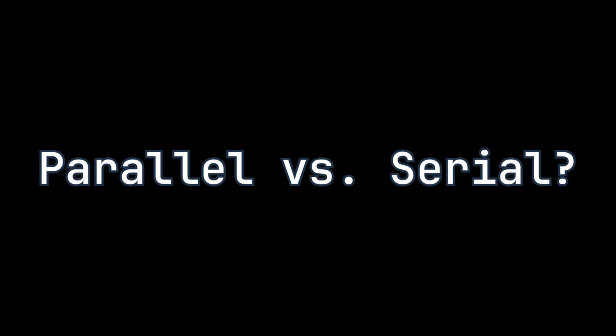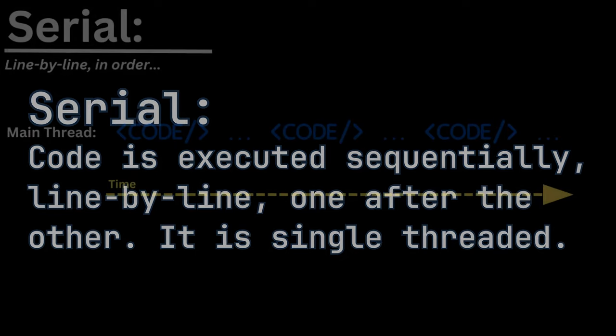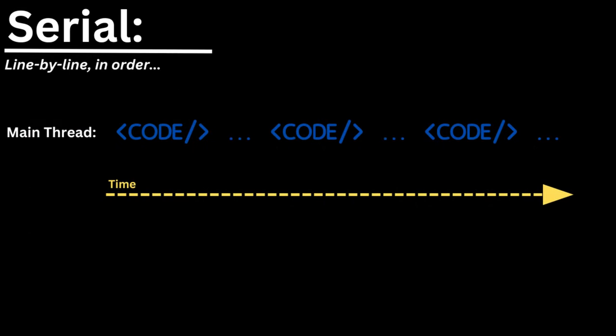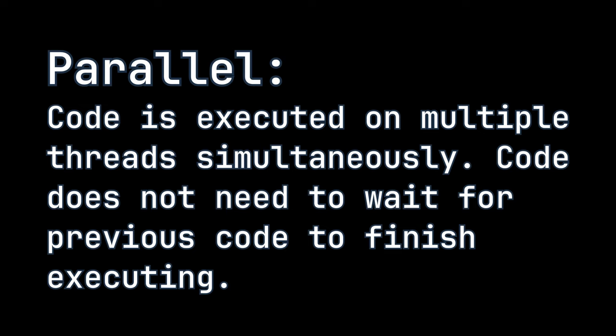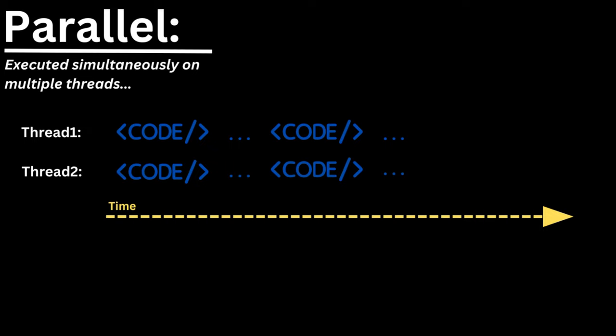Let's first get a definition of what parallel and serial execution is. Serial execution is what you are used to when programming in Studio — code is executed in a sequence, line by line, one after the other, waiting for previous code to finish before moving on. Parallel execution, on the other hand, allows us to execute code simultaneously on multiple processor threads, so we do not have to wait for a previous task to finish. This is great for heavy calculations, spreading work across multiple threads to improve frame time.